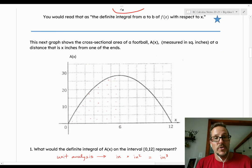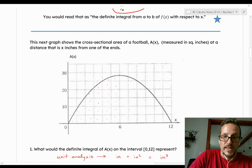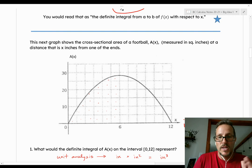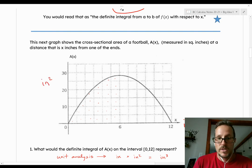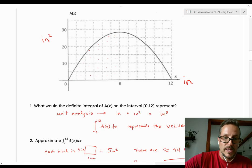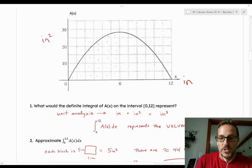So here we have another graph. And this graph is a graph of the cross-sectional area of a football over the length of the football. So on the X axis, we have the length of the football or the distance from one end of a football measured in inches. And we have the heights measured in inches squared. So what I want to know is what does the definite integral of A(x) on the interval from 0 to 12, what does that represent? Why would we want to do a definite integral?